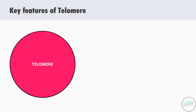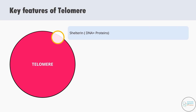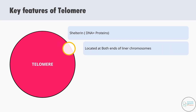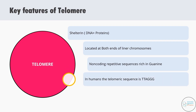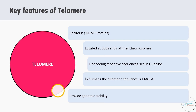Telomeres are specialized protein-DNA complexes collectively called shelterin. They are located at both ends of linear chromosomes. They do not code for any protein, and the telomeric DNA consists of several thousand tandem repeats of hexameric sequences rich in guanine nucleotides. In humans, the telomeric sequence is TTAGGG.